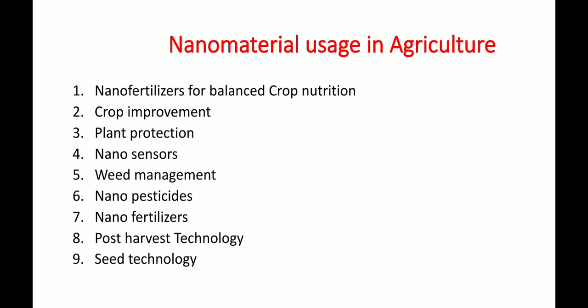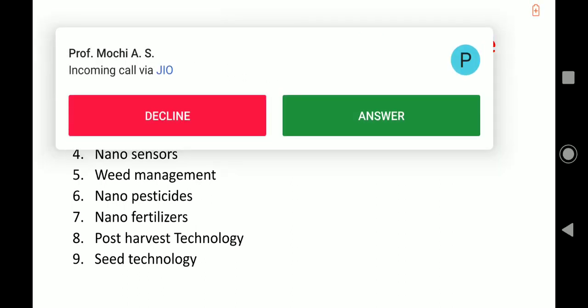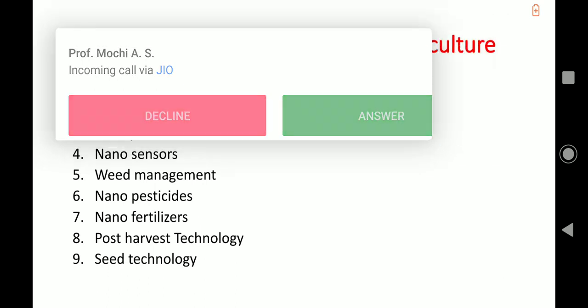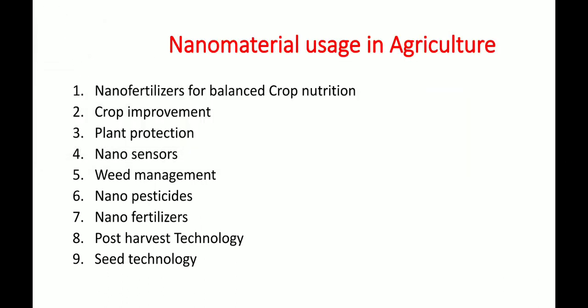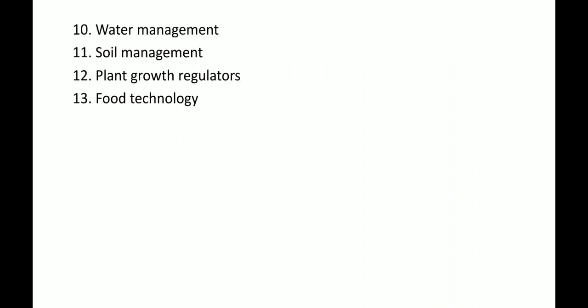Nanosensors included in the coating of agrochemical inputs provide microclimate environment information. Weed management and pest control using nanopesticides and nanofertilizers are also used as sources of nutrients in agriculture. This concludes today's topic on the applications of nanotechnology in agriculture.